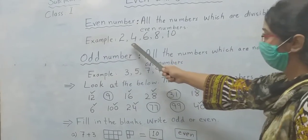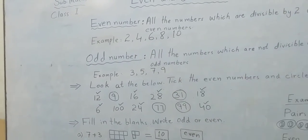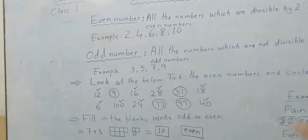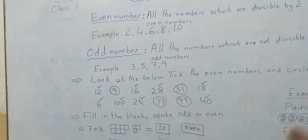Examples of even numbers: two, four, six, eight, ten. Hopefully this introduction is clear to all of you.